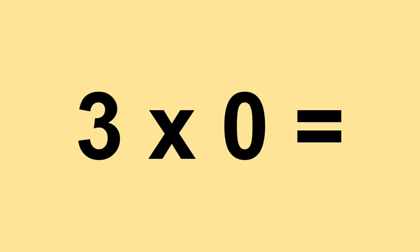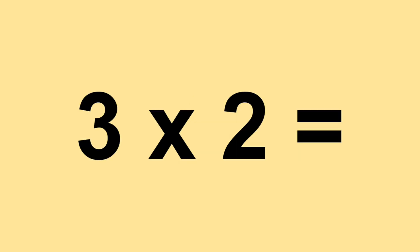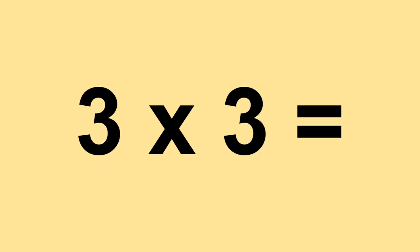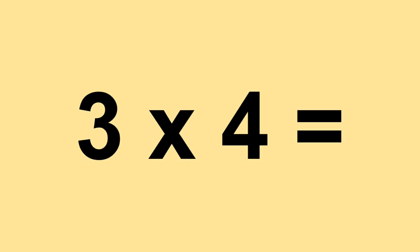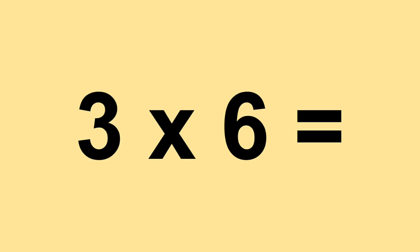Three times zero equals zero. Three times one equals three. Three times two equals six. Three times three equals nine. Three times four equals twelve. Three times five equals fifteen. Three times six equals eighteen.